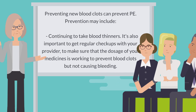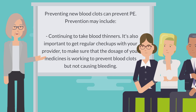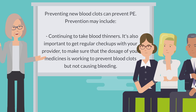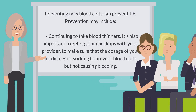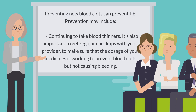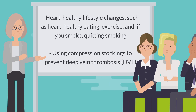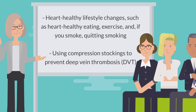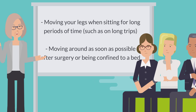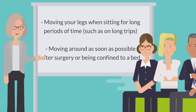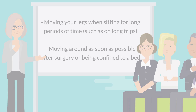Preventing new blood clots can prevent PE. Prevention may include continuing to take blood thinners and getting regular checkups with your provider to ensure the dosage is working to prevent blood clots without causing bleeding. Other prevention steps include heart-healthy lifestyle changes such as healthy eating, exercise, and quitting smoking, using compression stockings to prevent deep vein thrombosis, moving your legs when sitting for long periods such as on long trips, and moving around as soon as possible after surgery or being confined to a bed.